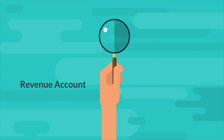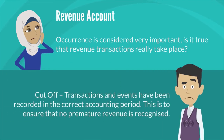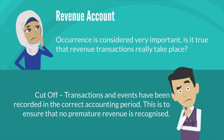For ease of understanding, in revenue transactions let's focus on two accounts: the revenue account and accounts receivable. For the revenue account, occurrence is considered very important — is it true that revenue transactions really took place? Also important is cut-off: whether transactions and events have been recorded in the correct accounting period, to ensure that no premature revenue is recognized.